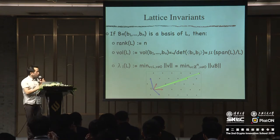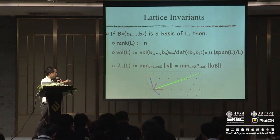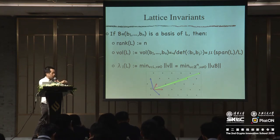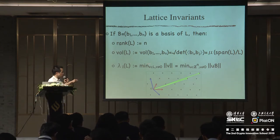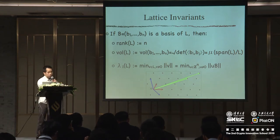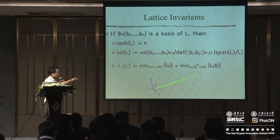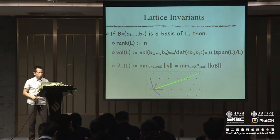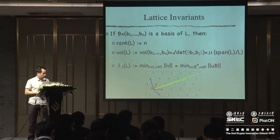The final invariant we will need is the first minimum. If you take any ball and intersect it with the lattice, there are only finitely many points inside the ball. So you can define a shortest vector: a vector whose Euclidean norm is minimal, excluding zero. We take any of these vectors and find the minimal Euclidean norm — we call that lambda_1. You can also say: take all integer vectors, multiply by the basis, and take the minimal norm.